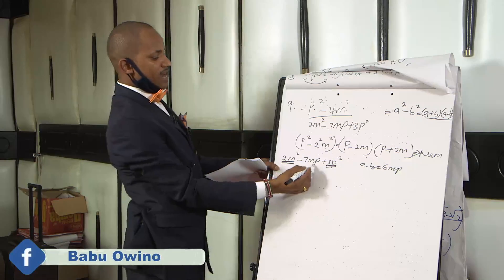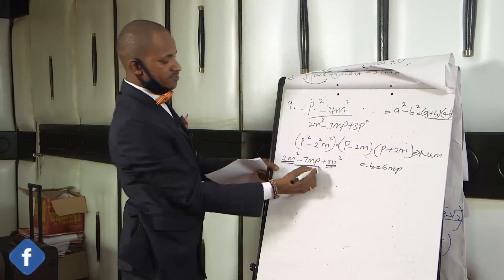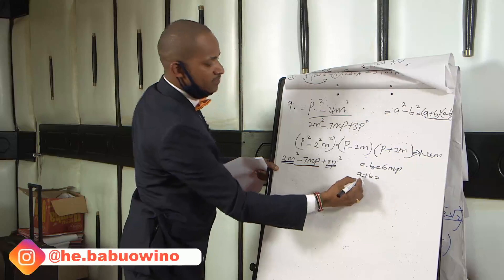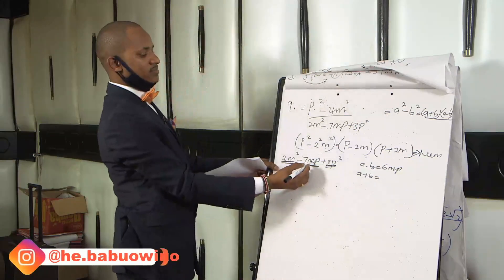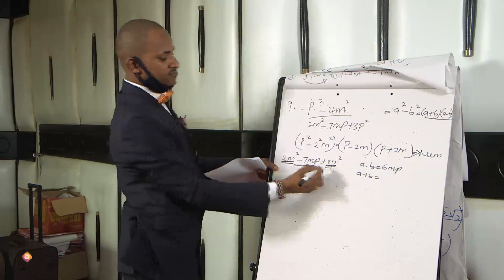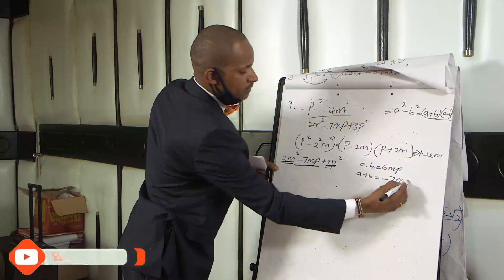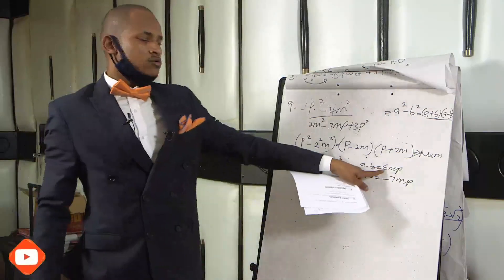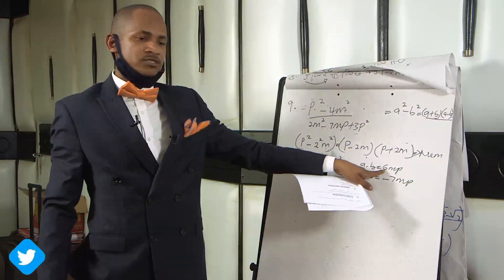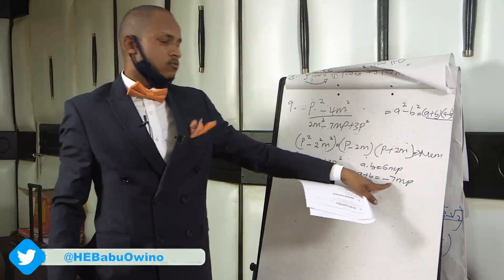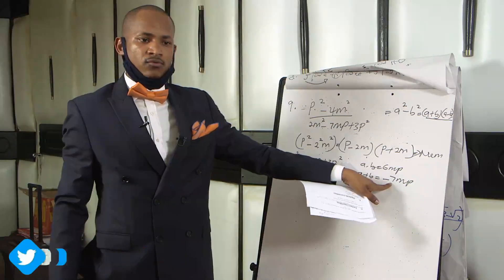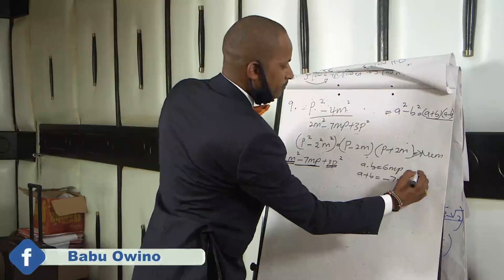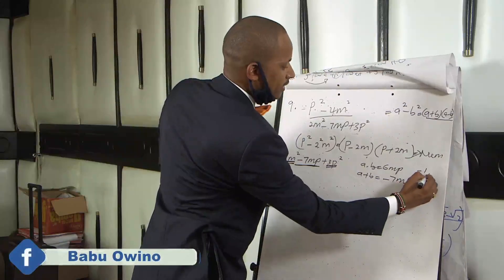But when you add the same two numbers, it gives you minus 7mp. So let the numbers be a and b. When you add them, gives you minus 7, and when you multiply, gives you 6. The numbers are minus 1 and minus 6.